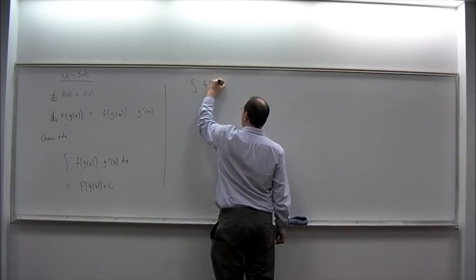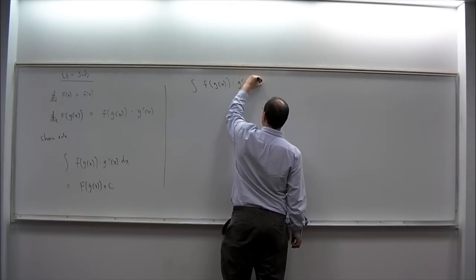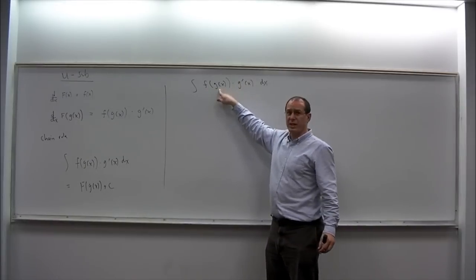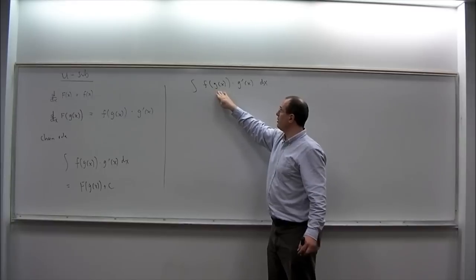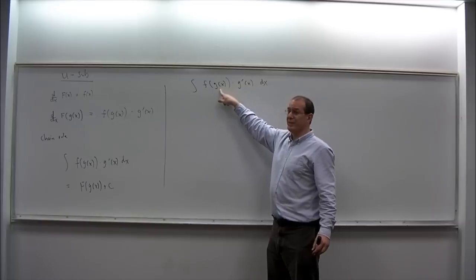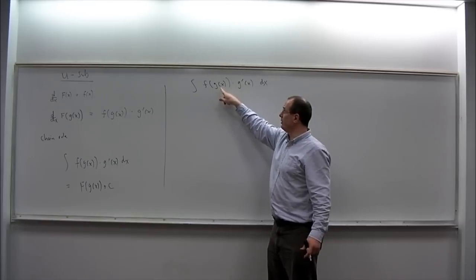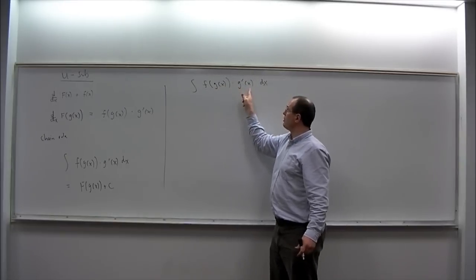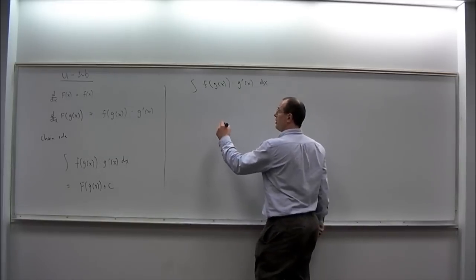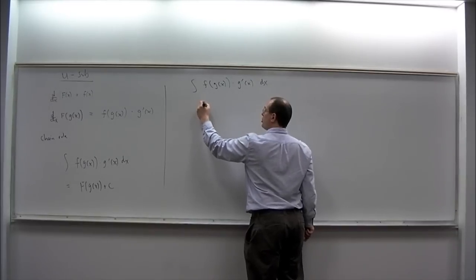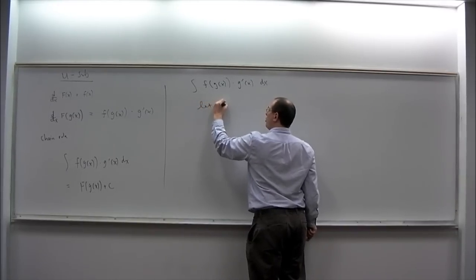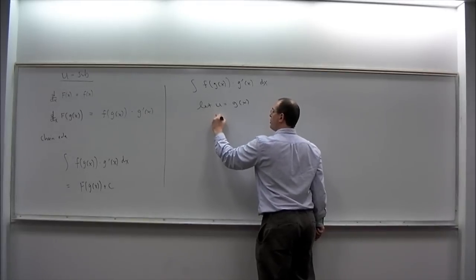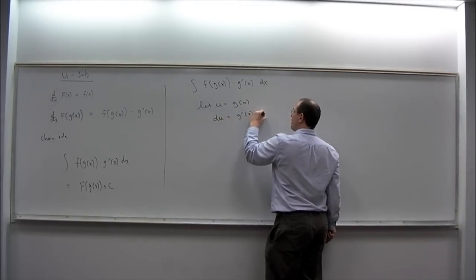Suppose we're looking at the integral of f of G of x times G prime of x — the integral of the composition times the derivative of the inside. So we have a composition, and then we have another factor which is the derivative of the inside of the composition. U-substitution is used primarily for this structure. The details go like this: we let U be the inside function, so U equals G of x, and then we compute the differential DU, which is G prime of x dx.